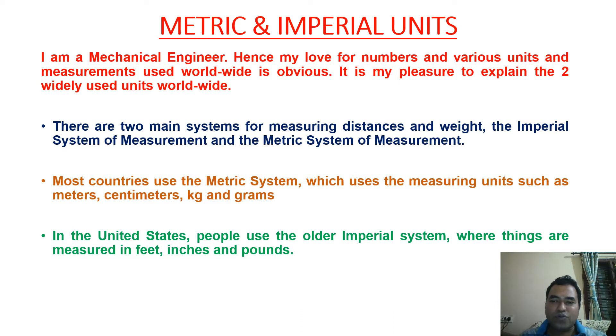As you know, there are two main systems for measuring distances and weight: the imperial system and the metric system. Most countries use the metric system which uses units such as meters, centimeters, kilograms and grams. In United States of America people use the imperial system in which you can come across units such as feet, inches and pounds.